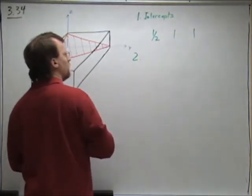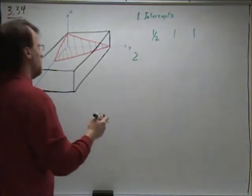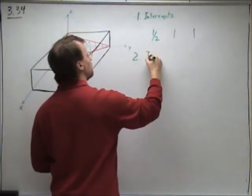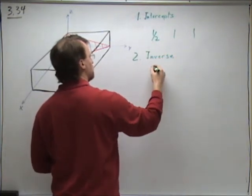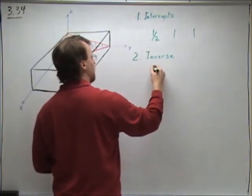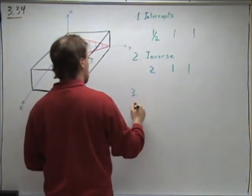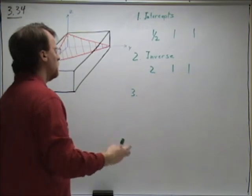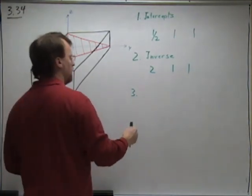So we're going to take the inverse of each of these. In this case, the inverse of one-half is two, one is one, one is one. We're going to multiply through to get rid of any denominators.